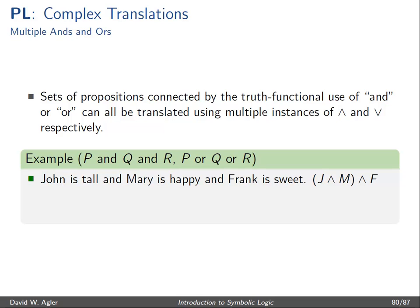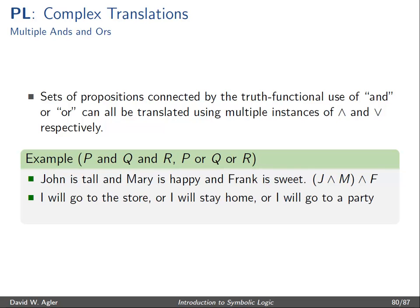We can put parentheses around J and M, or around M and F — it won't matter with respect to the translation. In the case of 'I will go to the store or I will stay home or I will go to the party', where s stands for 'I will go to the store', h stands for 'I will stay home', and p stands for 'I will go to the party', we can represent the whole sentence as s ∨ h ∨ p. Similarly, we could put parentheses around s and h rather than h and p — in this case it won't make a difference.